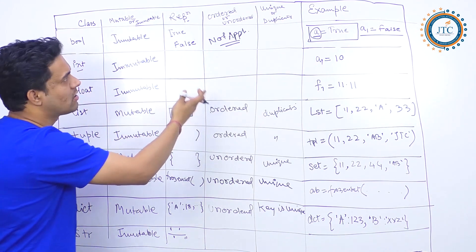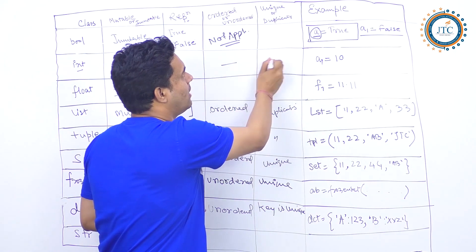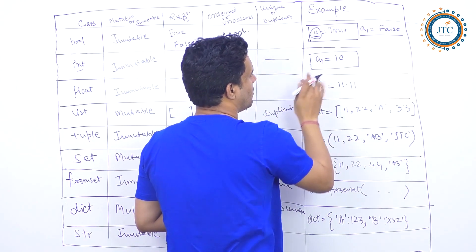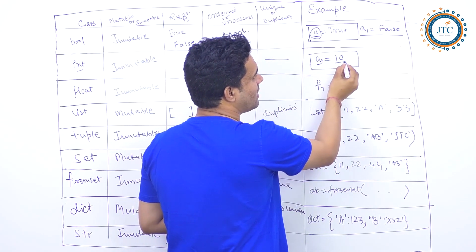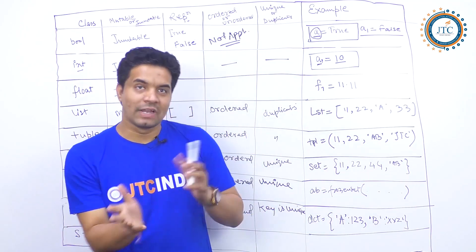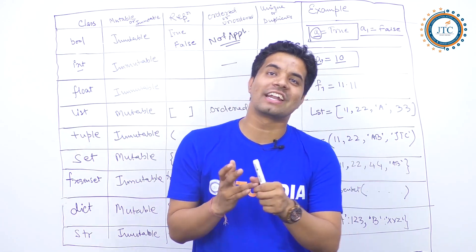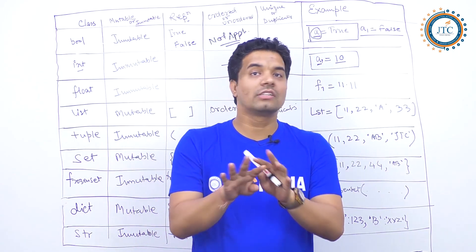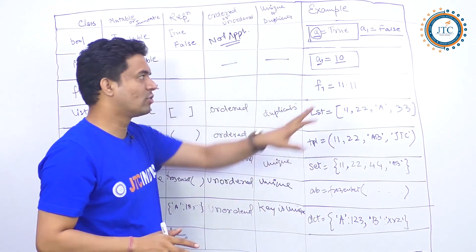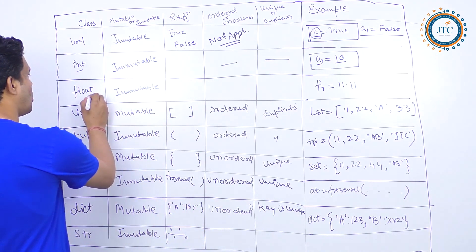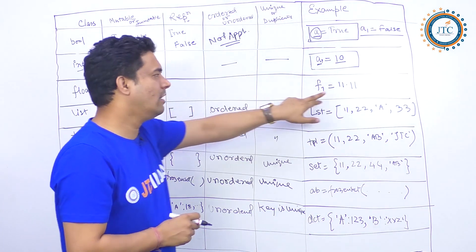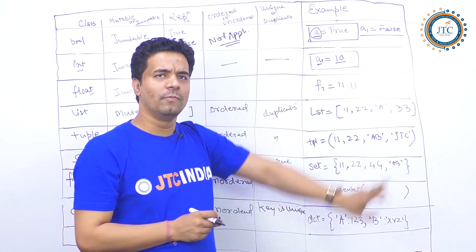For int, there is nothing to discuss about ordered/unordered or unique/duplicates. The way to declare it: `a1 = 10`, and the type of `a1` becomes int. One common question is about the range of integer — in Python there is no fixed range; you can provide as large a value as you want. Float is also immutable and uses decimal point representation.